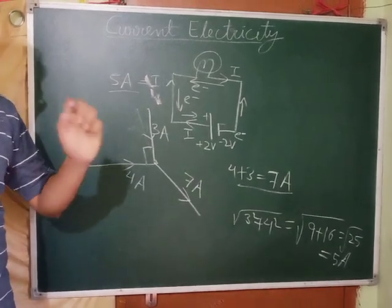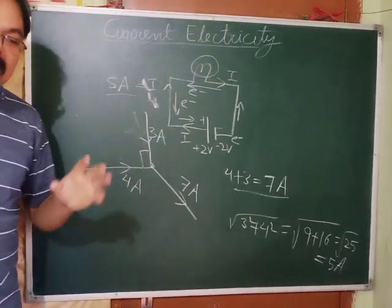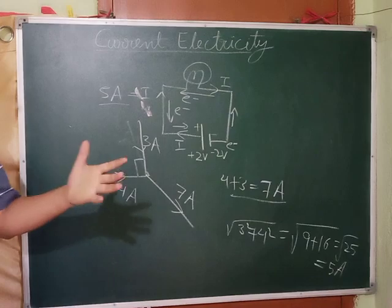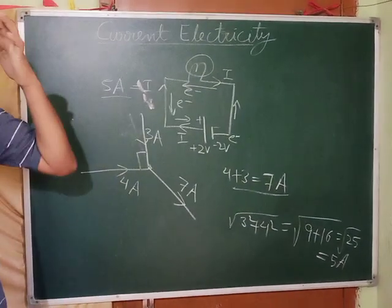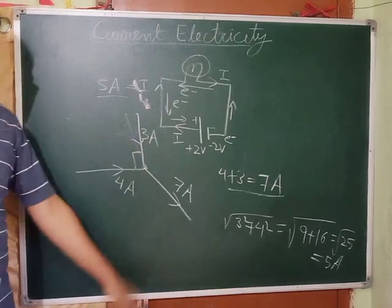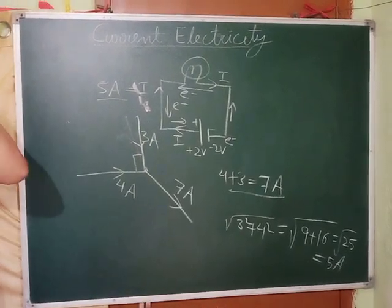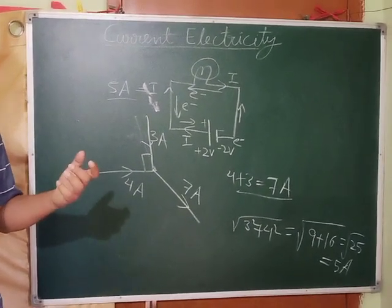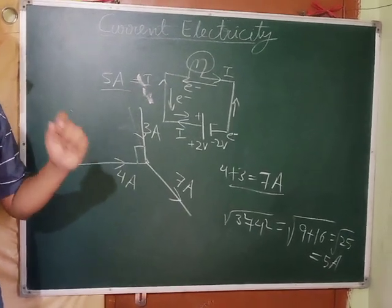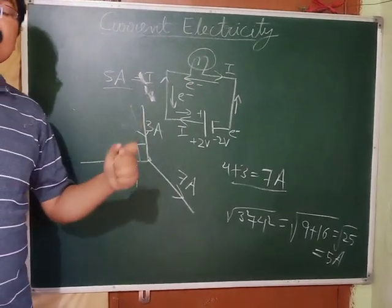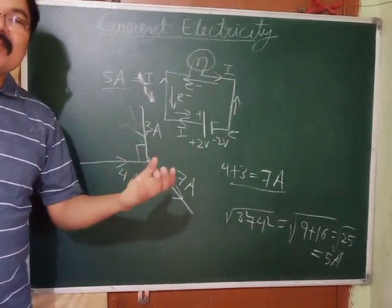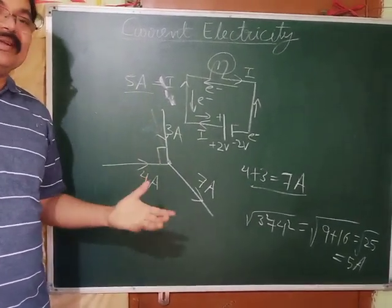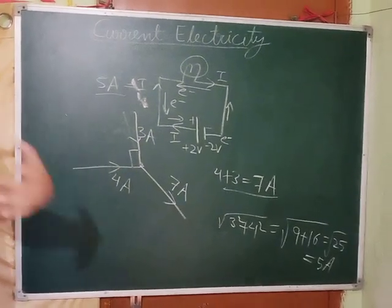So the definition was updated: vector quantities have magnitude, direction, and follow vector algebra. Scalar quantities have magnitude and follow simple algebra. Because of electric current, this updated definition was needed.